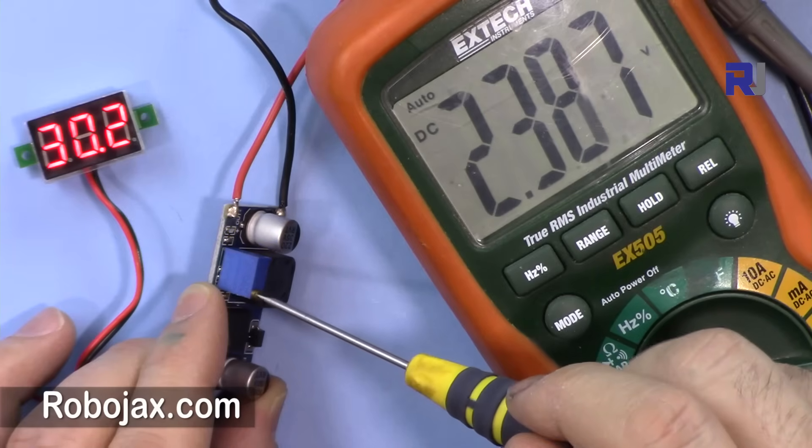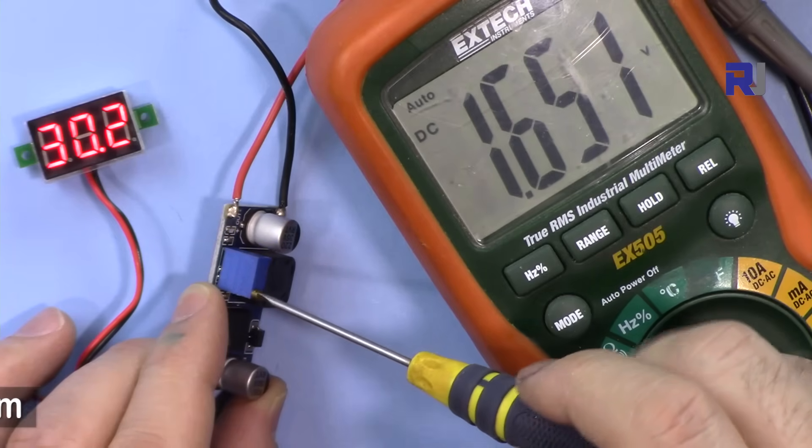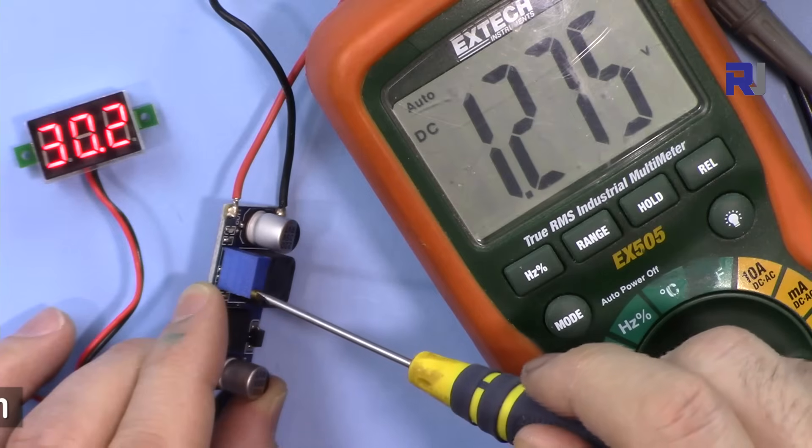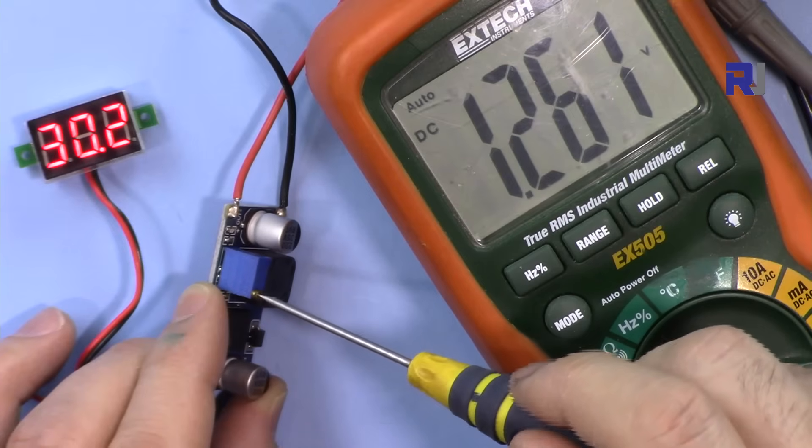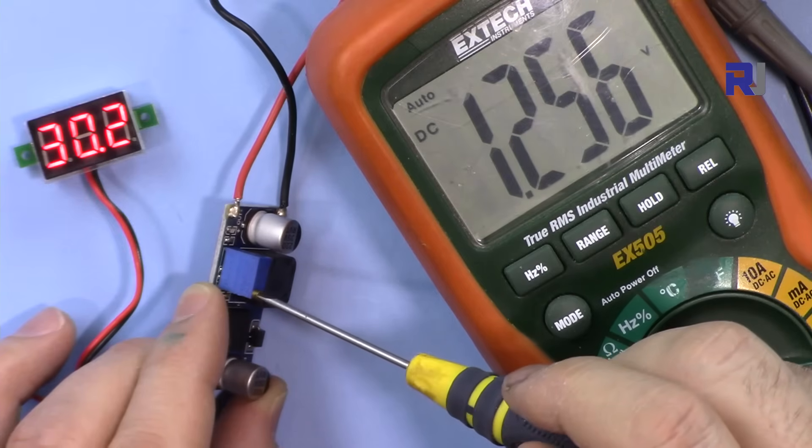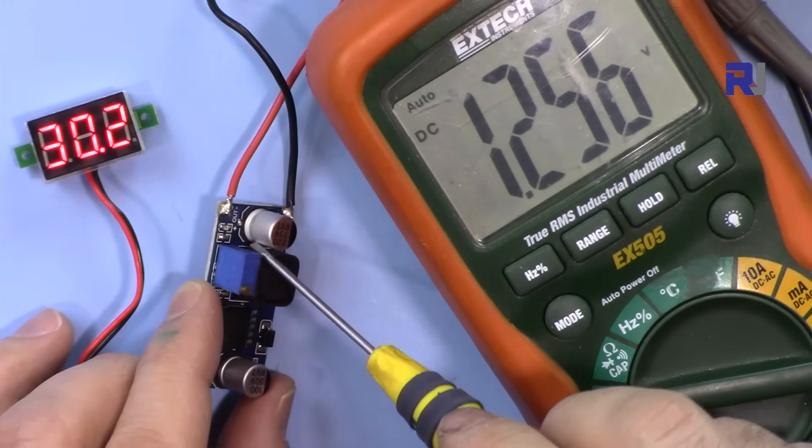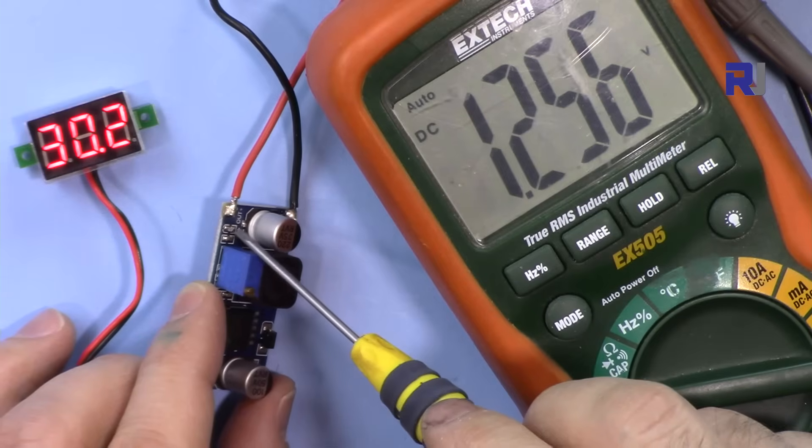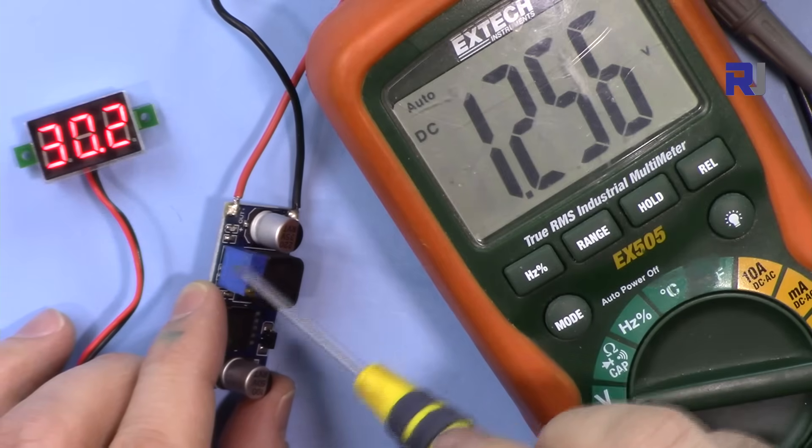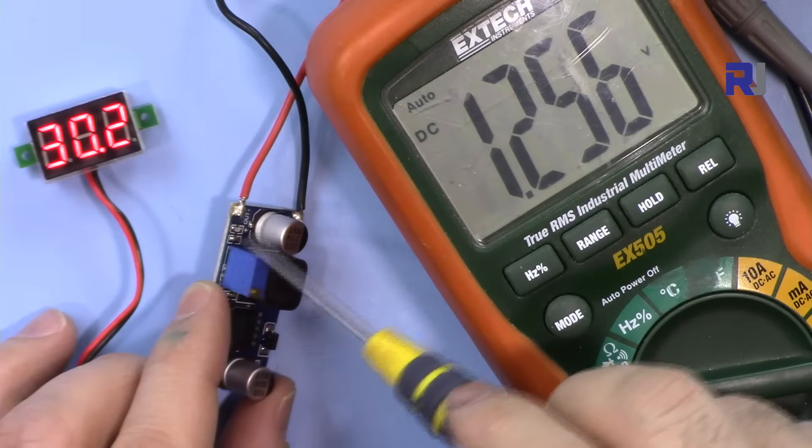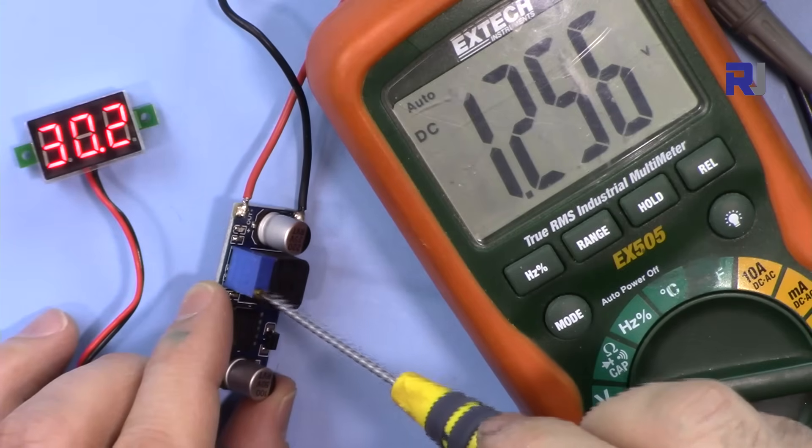I want to see what is the minimum. So the minimum is 1.56 and as you can see the LED, the output LED is also totally off because that needs 2.2 volts and higher plus some resistor that they put.